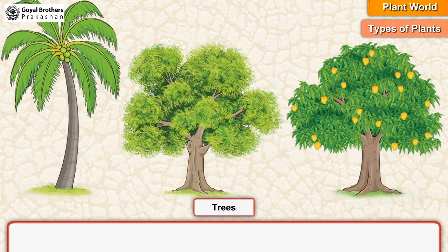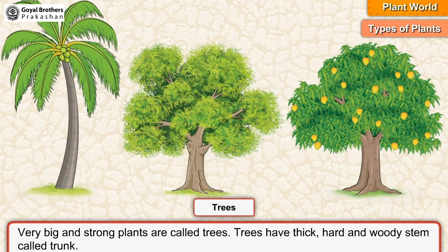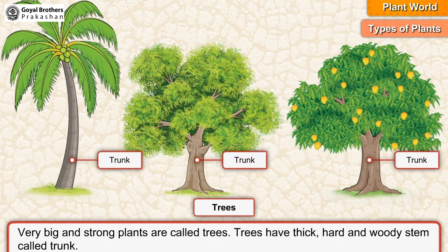Types of Plants. Trees: very big and strong plants are called trees. Trees have thick, hard and woody stem called trunk.